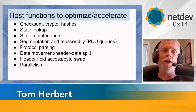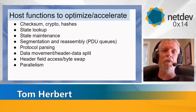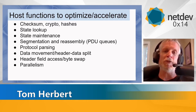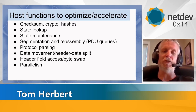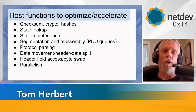Protocol parsing is really interesting, and I'll go into more depth in the next slides. Data movement and header-data split are unique to the host — when we get packets from the network, the point is to deliver data to the application as efficiently as possible. In the world of GPUs and CPUs, the data and headers may go completely different directions. The TCP/IP header might be processed by the CPU while the enclosed data is processed by GPUs, requiring increasing intelligence to handle that.